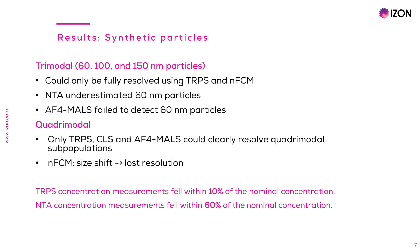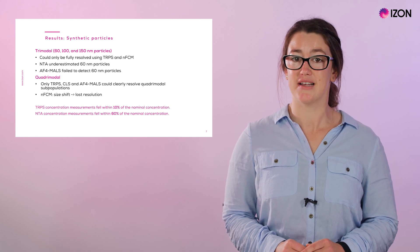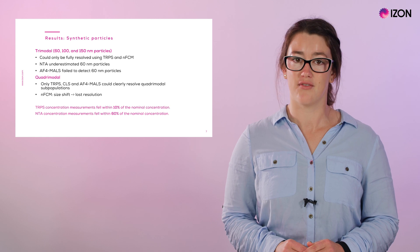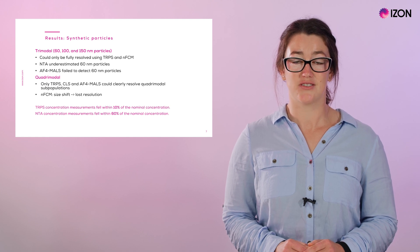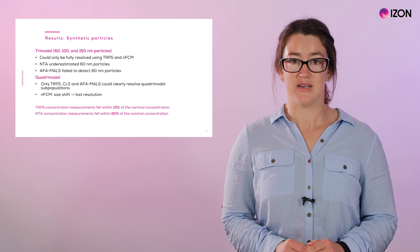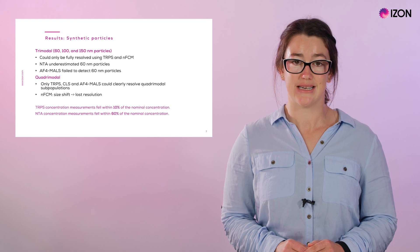When faced with a quadrimodal mixture, only TRPS, CLS, and AF4 MALS clearly resolved the subpopulations. While nanoflow cytometry was able to resolve the quadrimodal mixture, a size shift across repeated measurements caused resolution to be lost when results were averaged. Overall, this part of the study included 10 samples comprising polystyrene particles of varying sizes, ratios, and number of subpopulations. With these synthetic samples, TRPS showed good repeatability, with concentration measurements falling within 10 per cent of the nominal concentration, compared to 60 per cent for NTA.